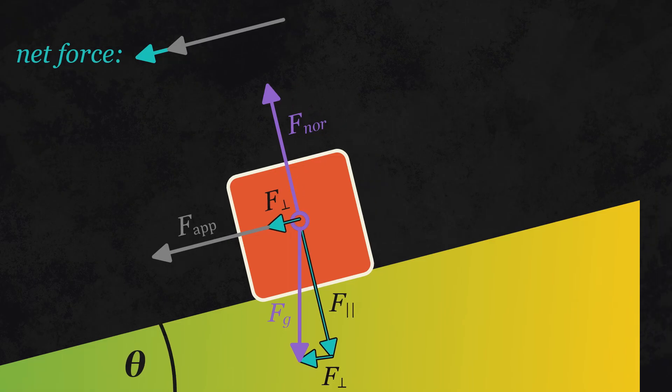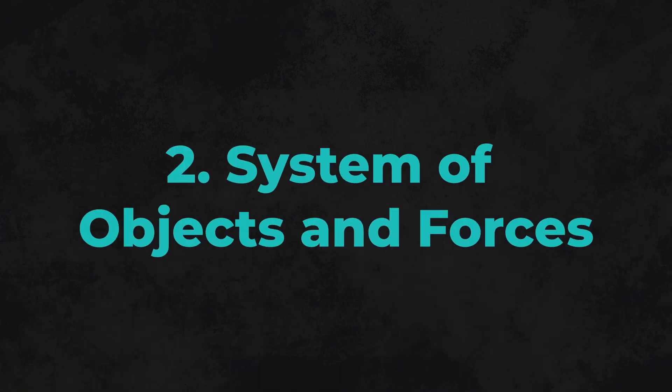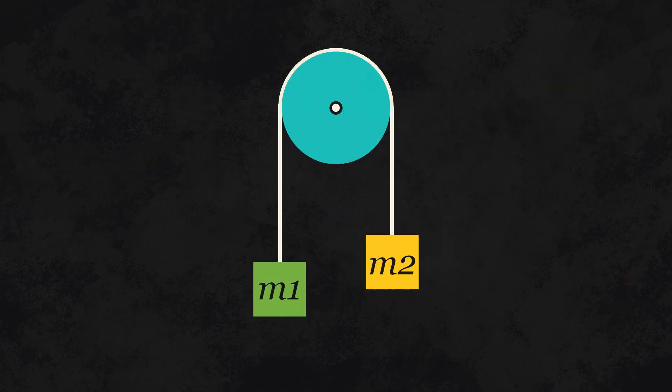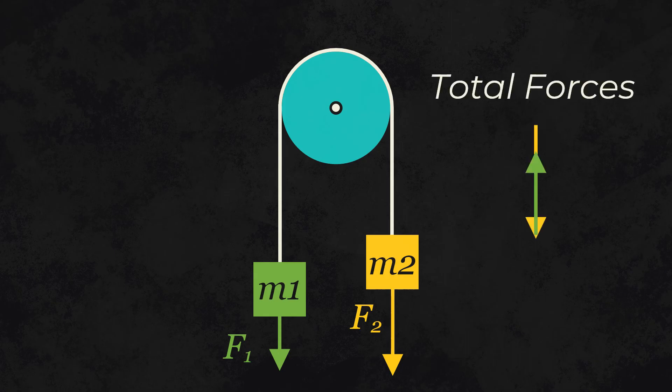If you have a problem that contains a system of multiple objects, you should consider the force as applying to the whole system instead of one object. For example, if you have a pulley system, the gravitational force acting on each weight is actually acting on the whole system. This makes it easier to evaluate the problem.